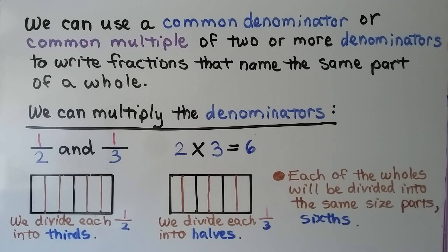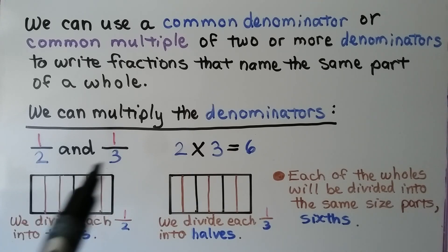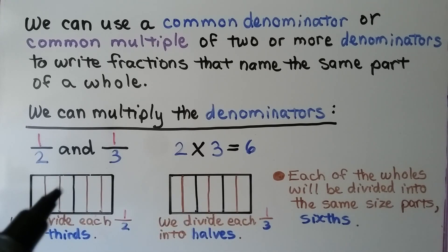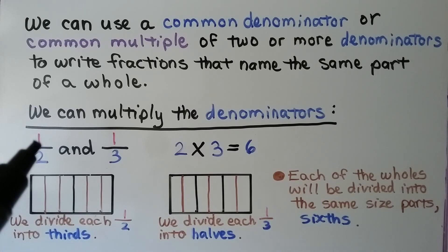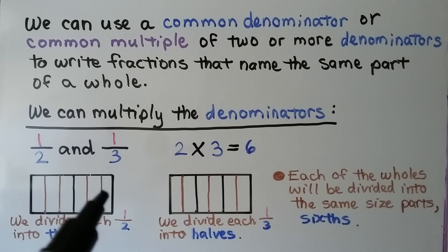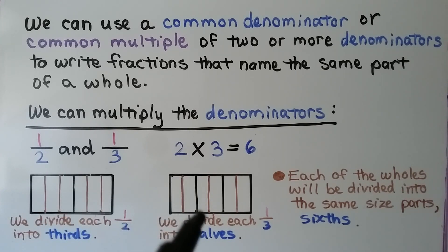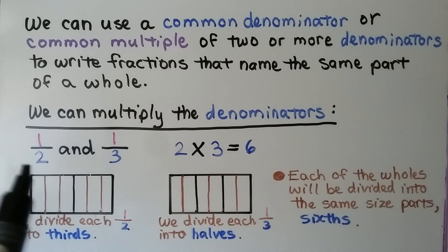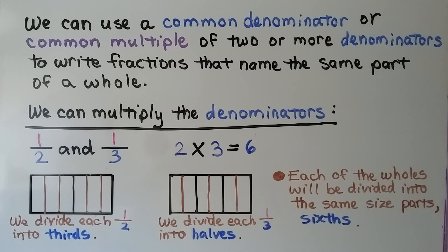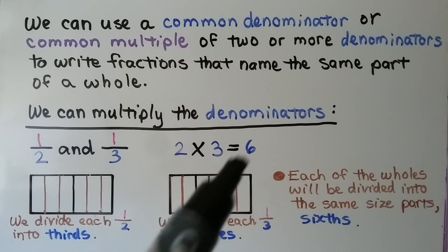We can use a common denominator or common multiple of two or more denominators to write fractions that name the same part of a whole. We have 1/2 and 1/3. We do 2 times 3, that's 6. We have a rectangle cut in half, and we divide it into thirds by drawing thirds for each half. Then we have black lines cutting the rectangle into three equal parts — thirds — and we divide each third in half. Each of the wholes will be divided into the same size parts: 6. Just like 2 times 3 is equal to 6.